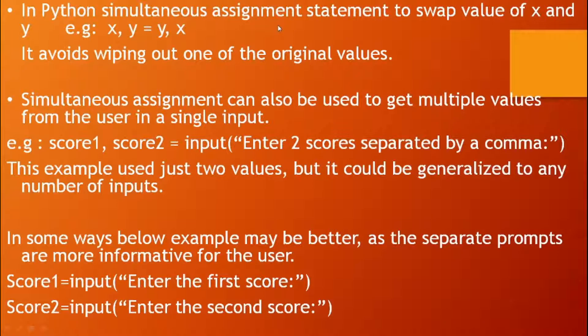In Python, simultaneous assignment statement can swap values of x and y. Suppose we want to swap the values x and y. The statement is x, y equals y, x. This means y value is initialized to x and x value is initialized to y. This is swapping, interchanging values. It avoids wiping out one of the original values.